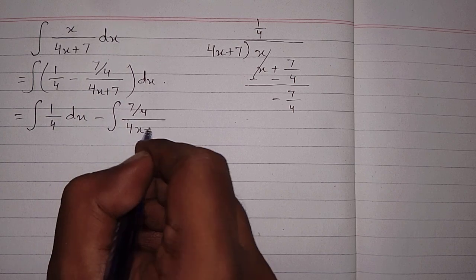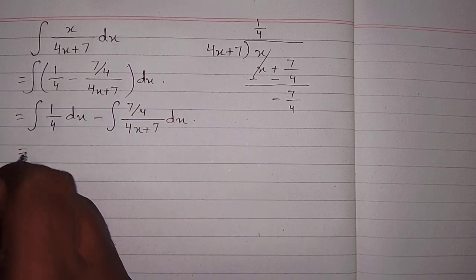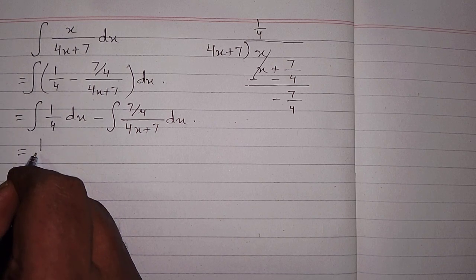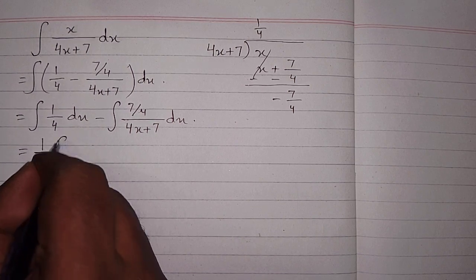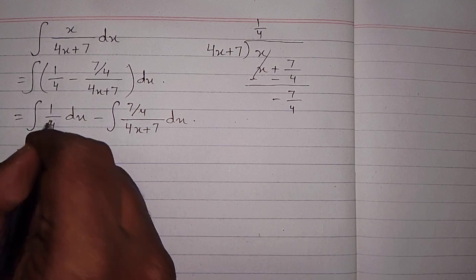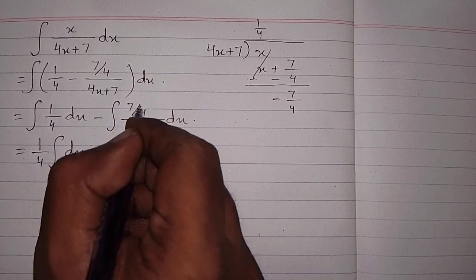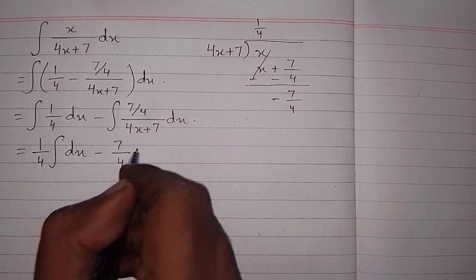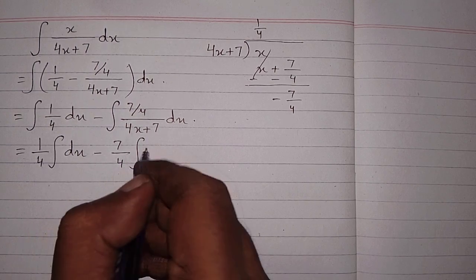Now we can write this integral as 1 upon 4 times integral of dx, because we can write this constant before the integral. Similarly this constant can be written before integral, so we have 7 upon 4 integral of 1 upon 4x plus 7 dx.